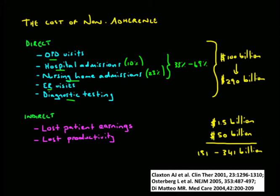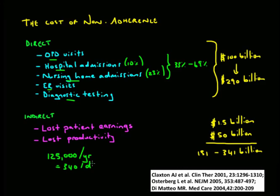Economic costs do not tell the whole story. If we think in terms of lives lost, we're talking about 125,000 people who die each year due to medication non-adherence — that's more or less 340 people per day. It is very important that a healthcare worker knows how to deal with non-adherence and how to prevent it, so that we can really help relieve suffering and also decrease the very high costs that this has to society as a whole.